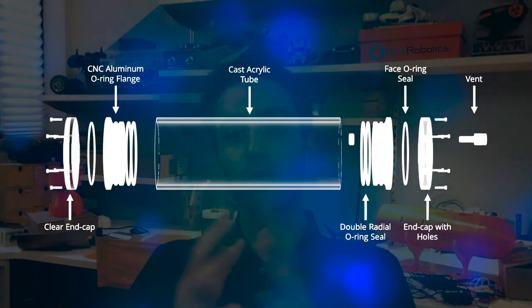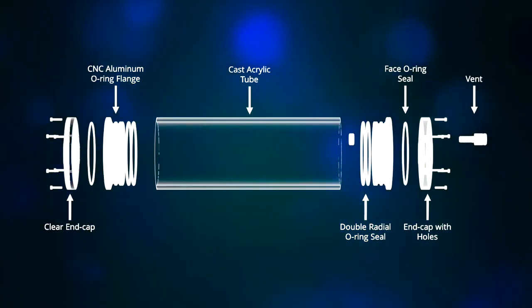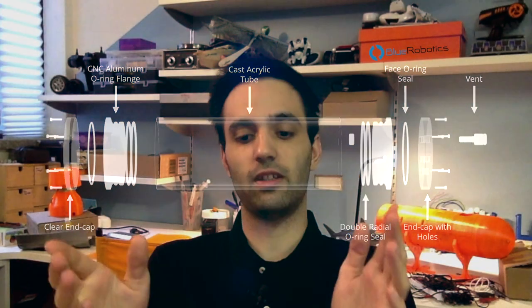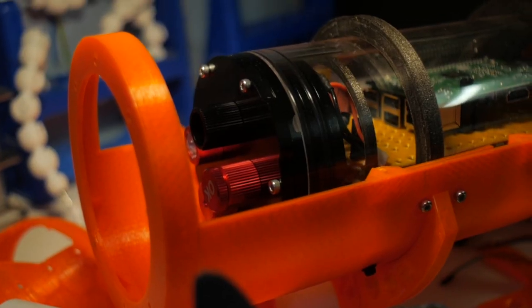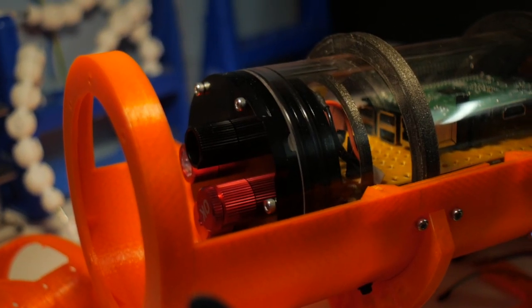The watertight enclosure that I use is from Blue Robotics. It's the 3-inch version and it's only 20 centimeters long. This watertight enclosure is really good because it has really good end caps that have two preventions for water to enter, and then it has very good penetrator designs. This enclosure is made of acrylic and it can withstand 150 meters of depth.